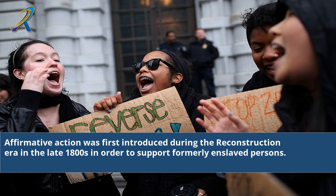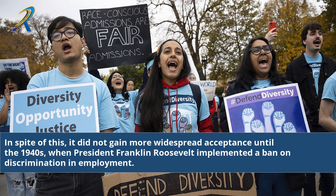Affirmative action was first introduced during the Reconstruction era in the late 1800s in order to support formerly enslaved persons. In spite of this, it did not gain more widespread acceptance until the 1940s, when President Franklin Roosevelt implemented a ban on discrimination in employment.